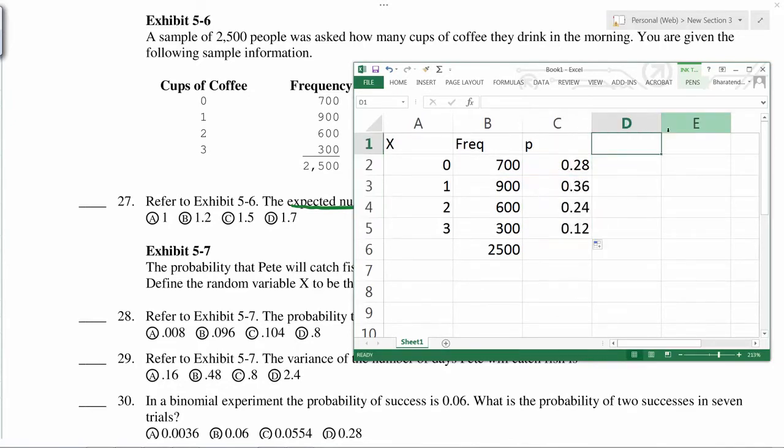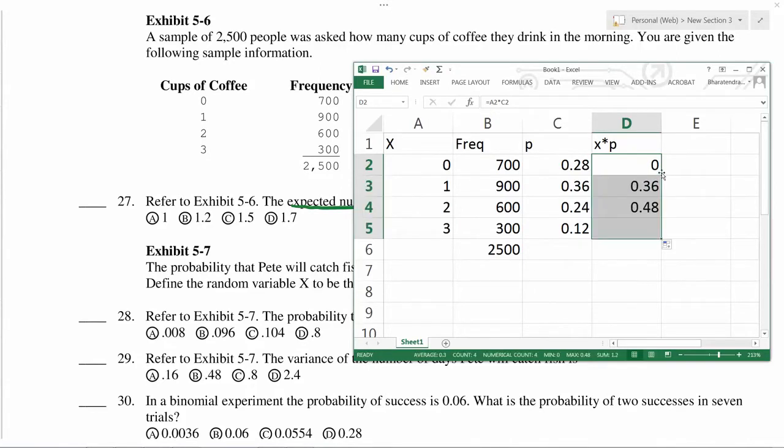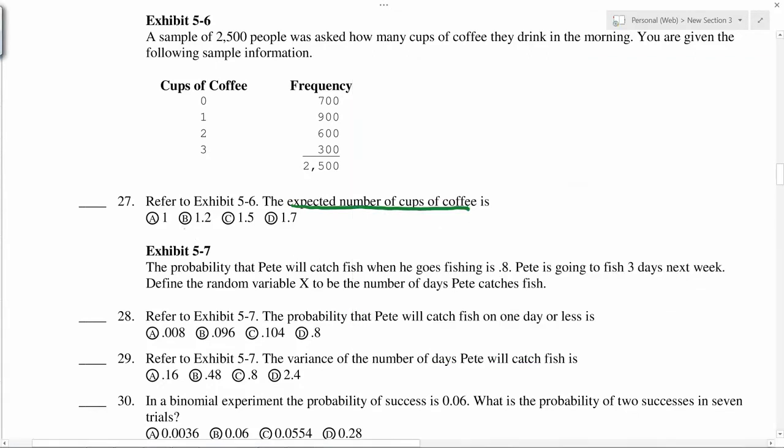And we can have x times p equals x times this. So I double click when this thin plus sign appears to get all other numbers, and then when we add, we get 1.2. So that 1.2 is the average.